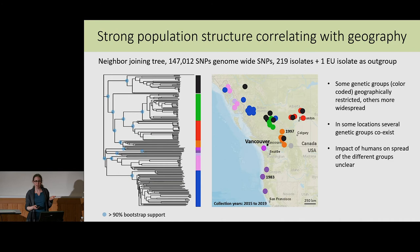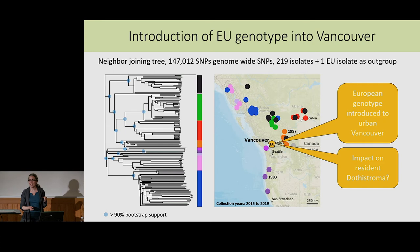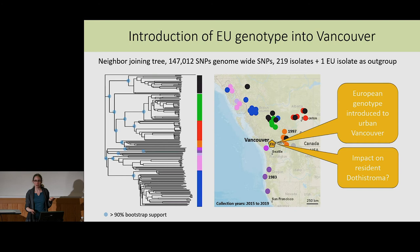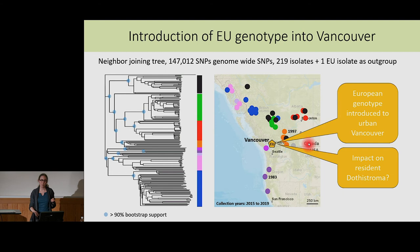Another discovery, perhaps a bit surprising, was that in Vancouver — the very urban area — we actually find Dotystroma, but it's a European strain which is genetically completely unrelated to the North American strains. It will be interesting to see if this strain remains in the city or starts to spread into forested areas, whether it will be interbreeding with the local strains, and if it has some kind of advantage compared to the local strains.